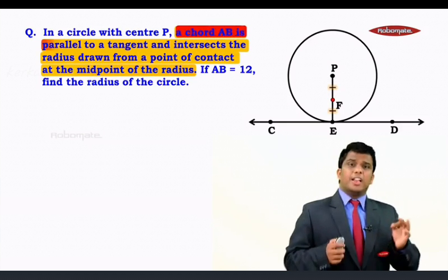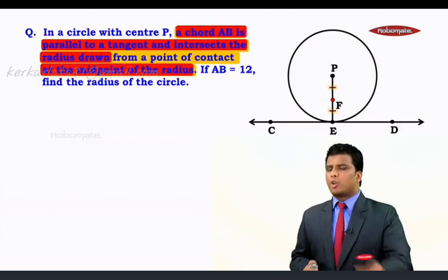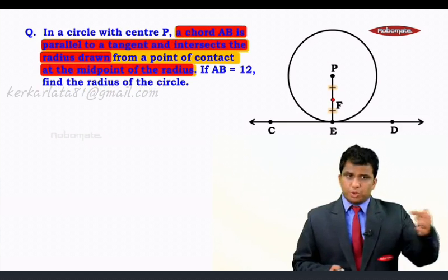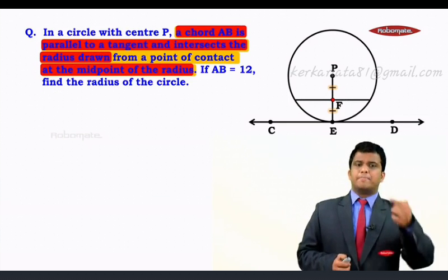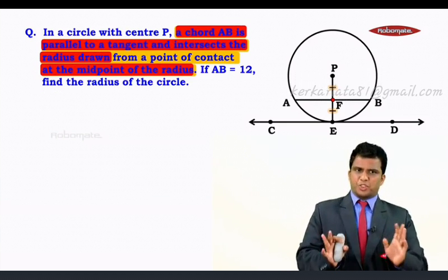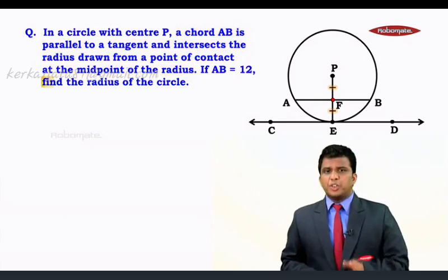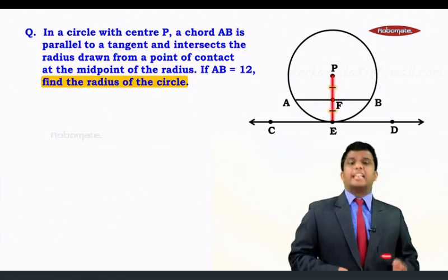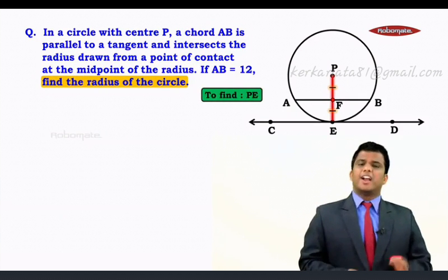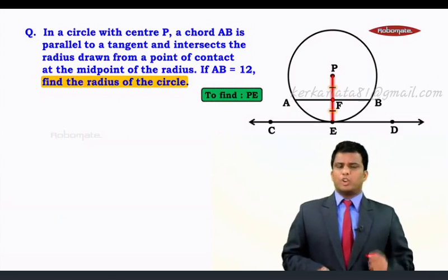Now here comes the chord. The chord AB will be now drawn in such a way that it is passing through point F. But more importantly, it has to be parallel to AB. Now this is what we have. AB is 12 units. And what we need to do is we need to find the radius of the circle which means we need to find how much is PE. Let's see how do we approach the sum.